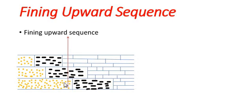For example, sandstone is coarser than shale, shale is coarser than limestone. At the top lies fine-grained limestone, so fining upward sequence forms.